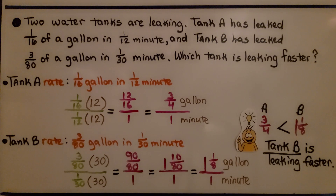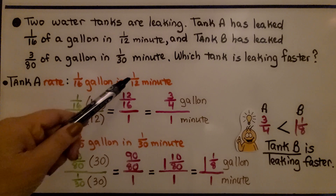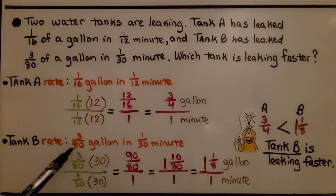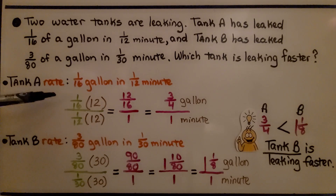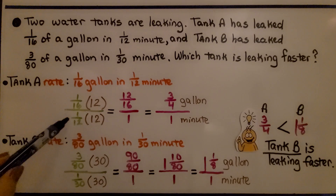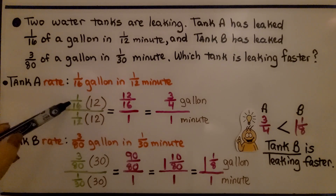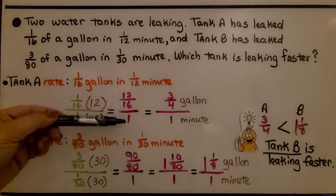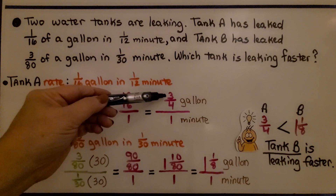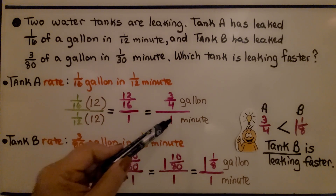Here's another word problem. Two water tanks are leaking. Tank A has leaked 1/16 of a gallon in 1/12 minute, and tank B has leaked 3/80 of a gallon in 1/30 of a minute. Which tank is leaking faster? For tank A, our compound fraction is 1/16 over 1/12. We can use multiplication because 1/12 is a unit fraction. To make 1/12 equal to 1 whole, we multiply by 12. We multiply 1/16 by 12 to get 12/16, which simplifies to 3/4. Tank A's rate is 3/4 gallon per minute.